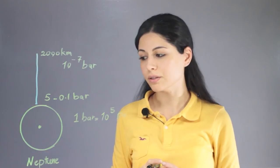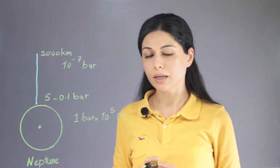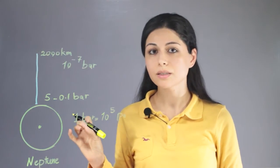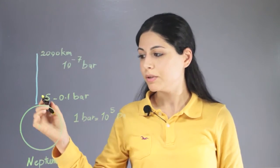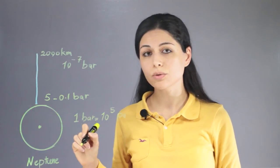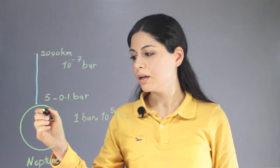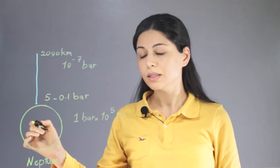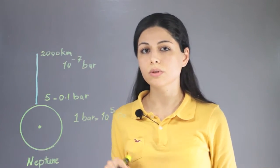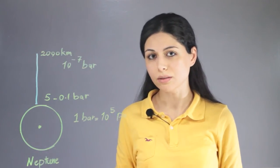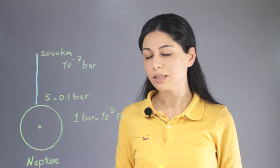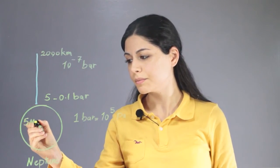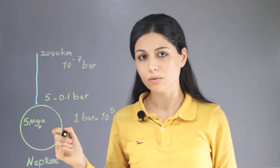The third region is the deep depth in the atmosphere near the center of the planet. When we go toward the center of the planet, in the deep depth, the pressure increases to high values and reaches a maximum of, for example, 5 megabar, which is a very high value for pressure.